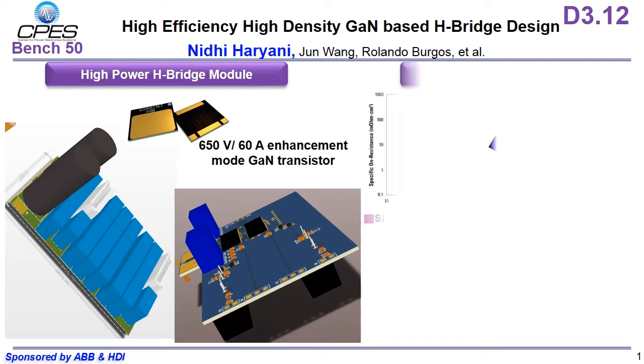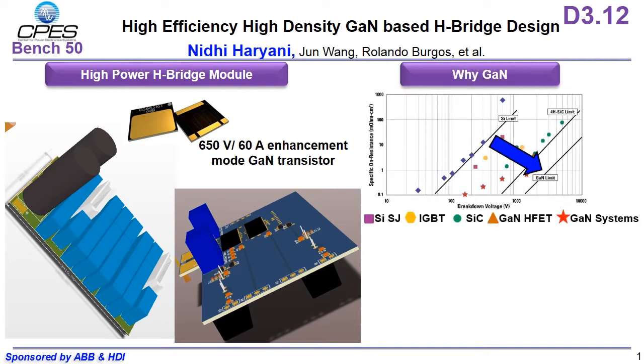Each phase leg module has four GaN devices, two of which are in parallel. We use GaN because it has lower conduction and switching losses, which enables us to go to higher switching frequency.